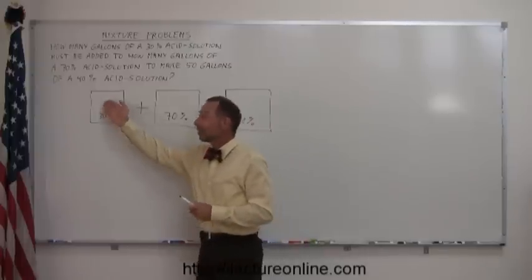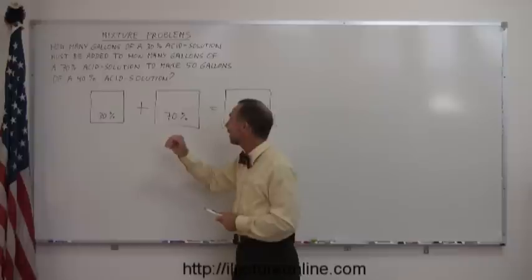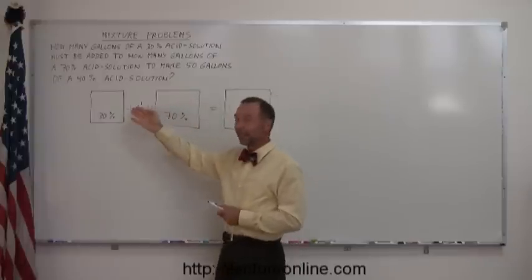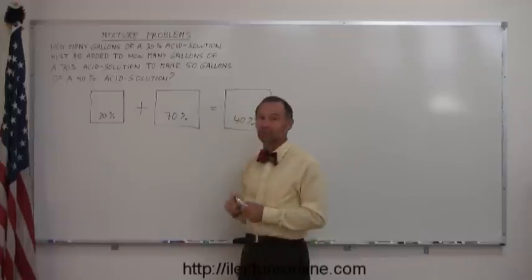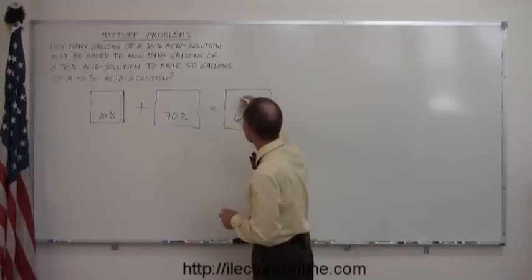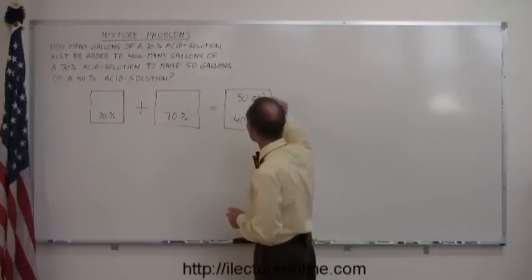Also in these boxes, we want to put in there how much of each that we have. Now, it doesn't tell you how much you use of this solution, and it doesn't tell you how much you use of this solution. Matter of fact, that's what you're supposed to figure out. But it does tell you that you have 50 gallons of this solution. Alright, so we put 50 gallons over here.